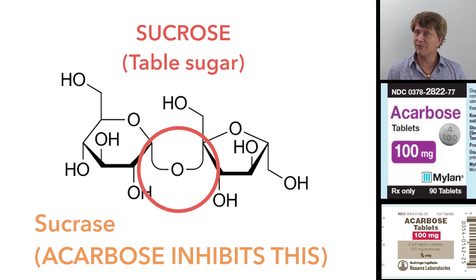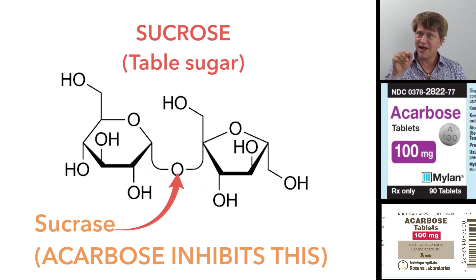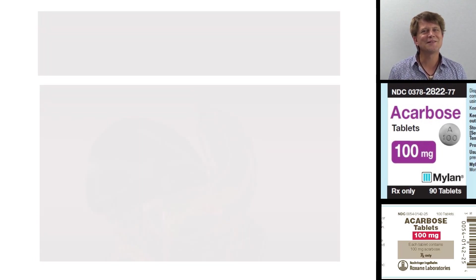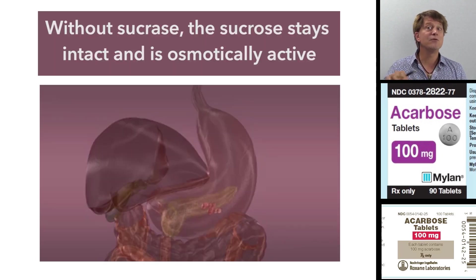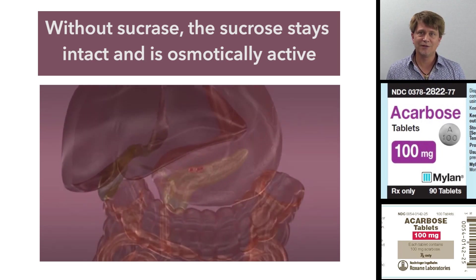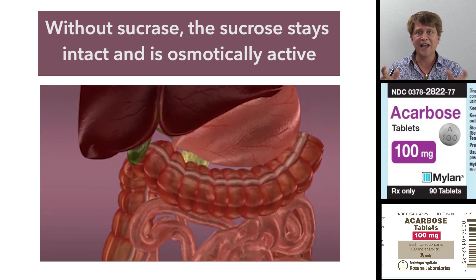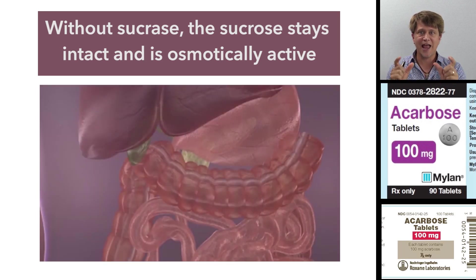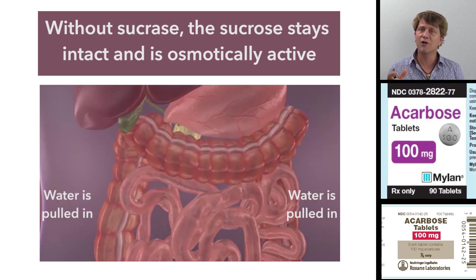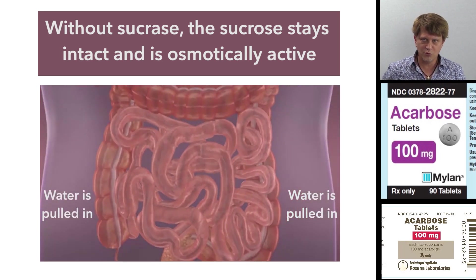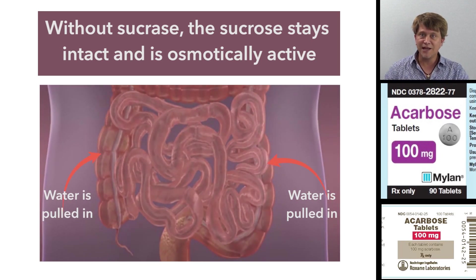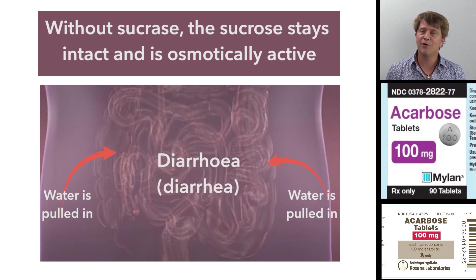We use sucrase from the brush border enzymes to break that bond. But what happens if you don't have that enzyme? If you don't have sucrase, the disaccharide stays as a disaccharide. It's an osmotically active particle and it goes through the gastrointestinal tract, sucking in water and creating diarrhea.